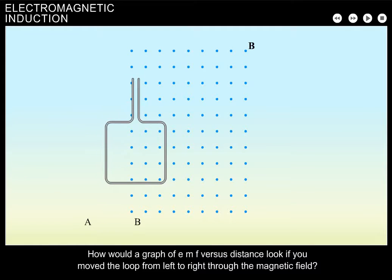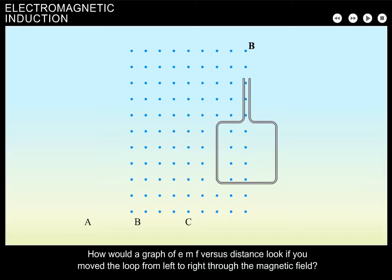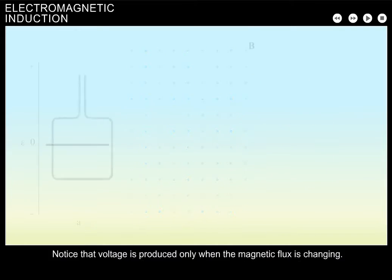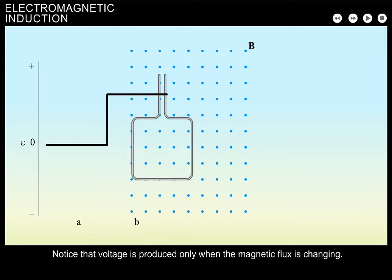How would a graph of EMF versus distance look if you move the loop from left to right through the magnetic field? Notice that voltage is produced only when the magnetic flux is changing.